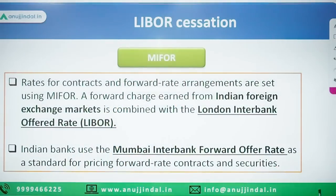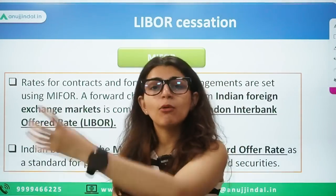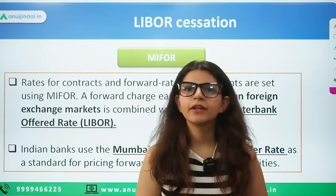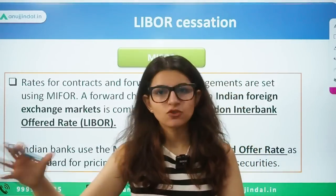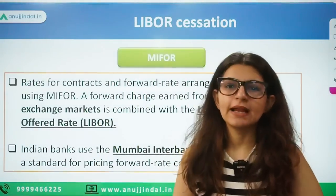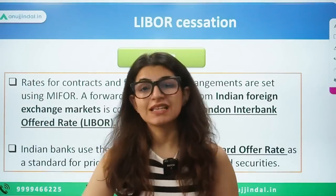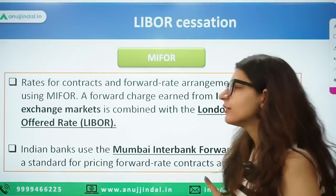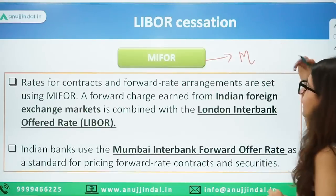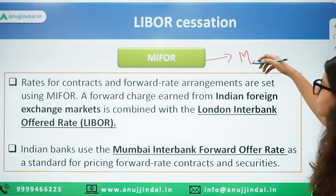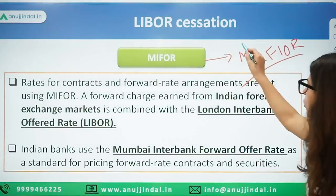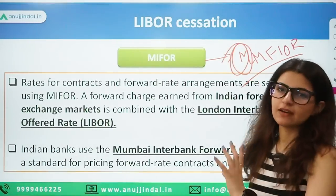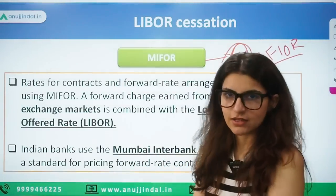Since LIBOR was found to be unreliable and MIFOR was based on LIBOR, RBI decided that MIFOR also needs to transition. That is why after MIFOR came MMFIOR — Modified Mumbai Interbank Forward Outright Rate. This modified rate is now used as the reference rate for various interbank transactions.